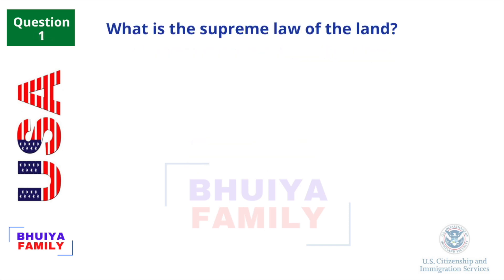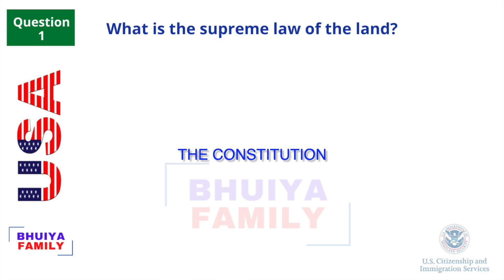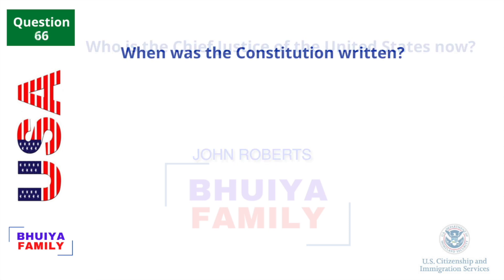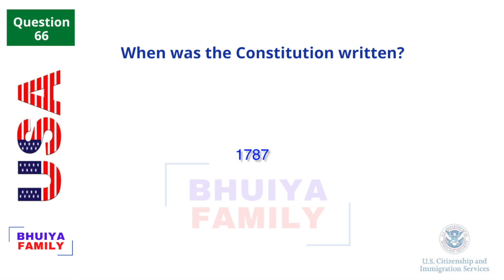What is the Supreme Law of the Land? The Constitution. Who is the Chief Justice of the United States now? John Roberts. When was the Constitution written? 1787.